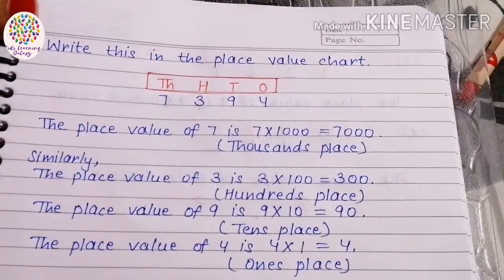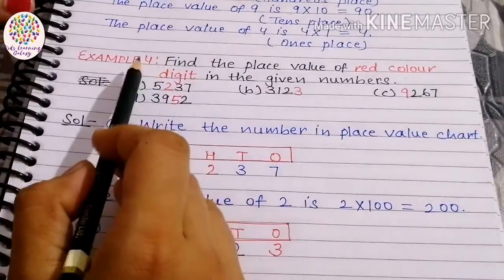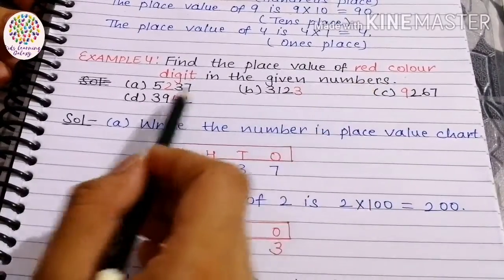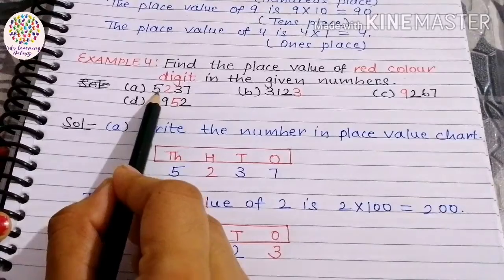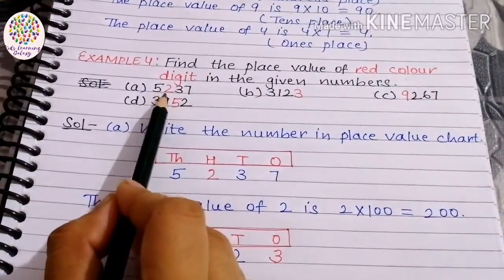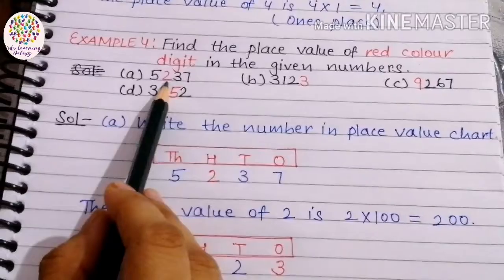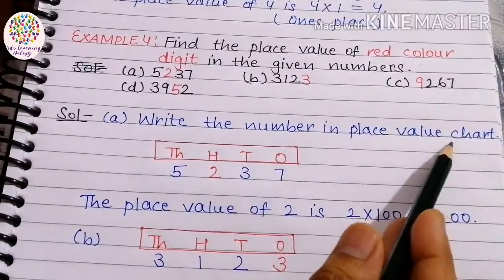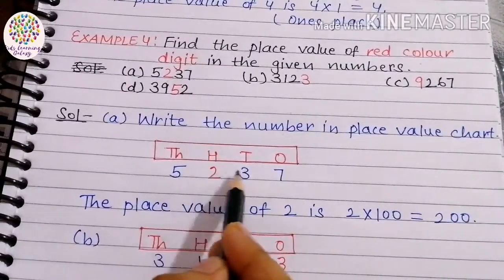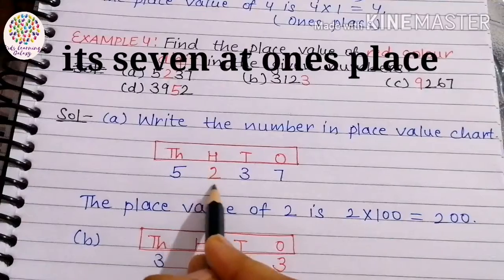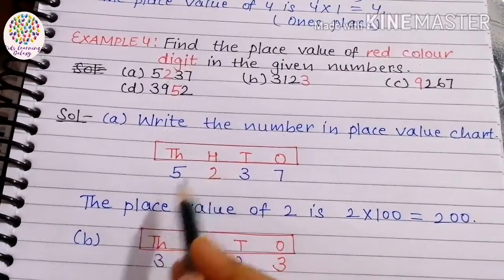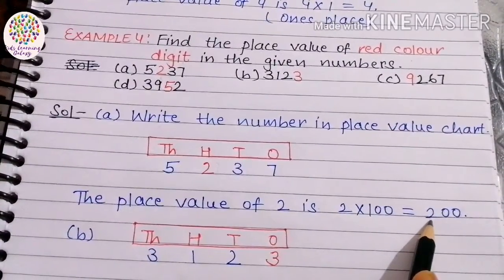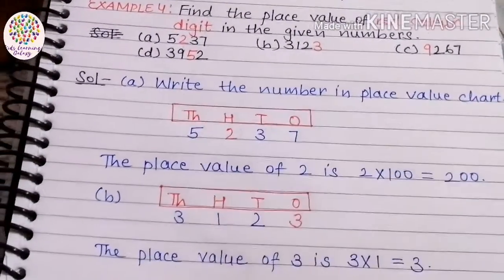Next example: find the place value of the red color digit in the given numbers. Part A is 5234, and the red color digit is 2. We write the number in the place value chart. 2 is at hundreds place, so the place value of 2 is 2 × 100 = 200.